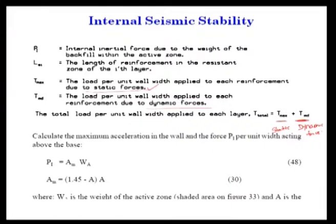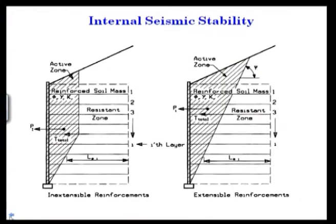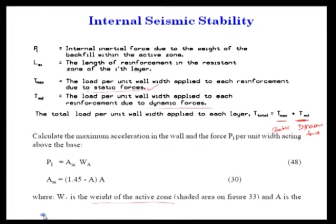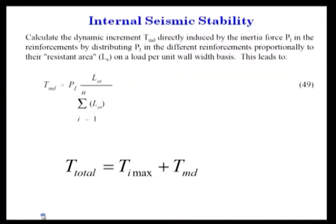The maximum oscillation force P1 per unit width acting above the base: PI = AM·WA, where AM = (1.45 - A)·A, and WA is the weight of the active zone (shaded area in the figure). The dynamic increment TMD is calculated by distributing PI among the different reinforcement layers proportionally to their resistance area LEi on a load per unit wall width basis. TMD equals PI·LEi divided by the sum of LEi for all n layers.